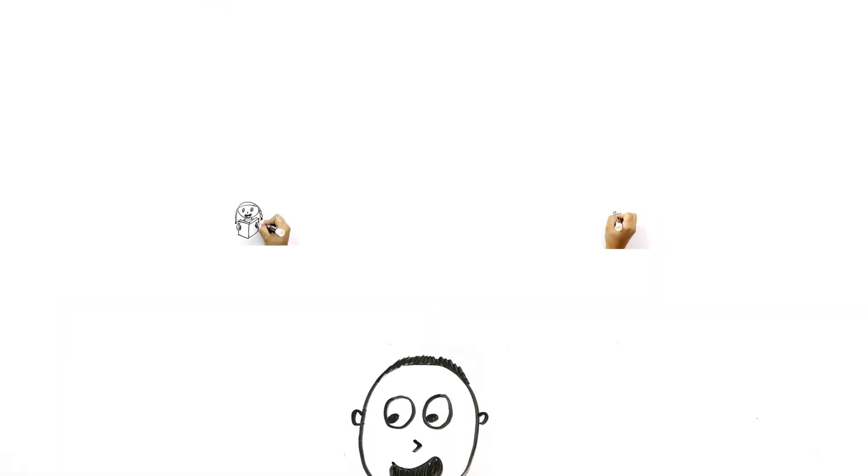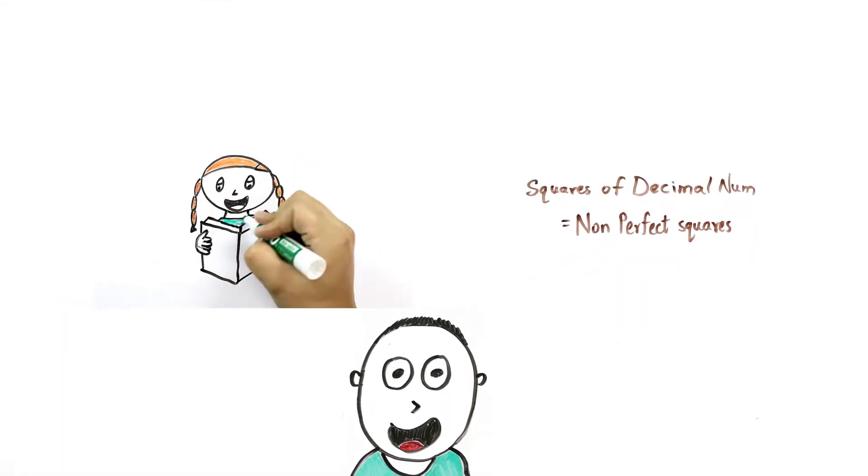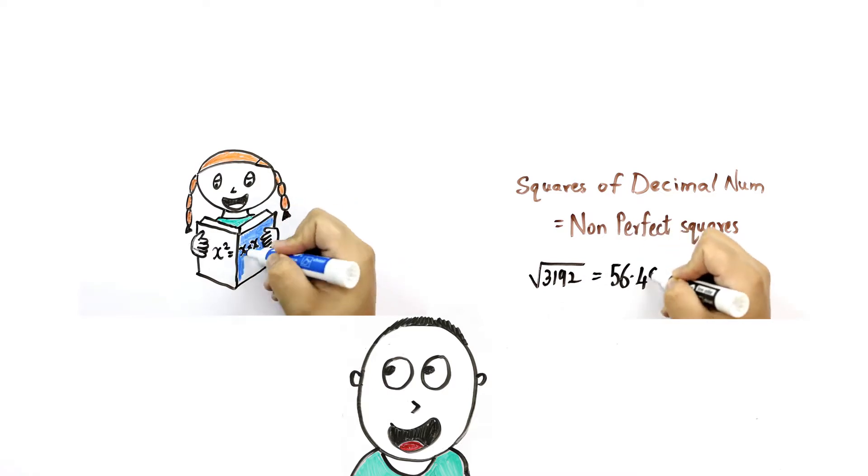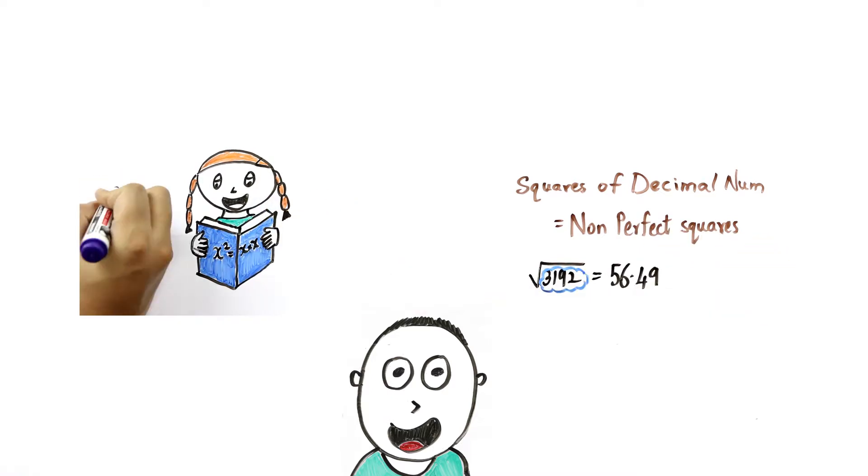We have seen how to find square root of perfect and non-perfect squares in our previous videos. But to use both these shortcuts, you have to identify whether a number is a perfect square or not in the first place.